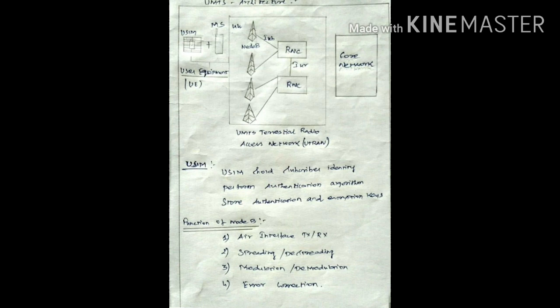Now we come to the functions of Node B. Air interface, spreading, modulation, and error correction. Let us see one by one. Basically, you can consider the Node B as a radio transmitter which communicates with the mobile station. It uses the WCDMA technology. Second, spreading and modulation is nothing but you have to add some additional information with the baseband signal for the purpose of successful transmission.